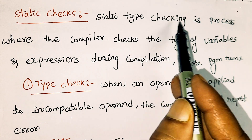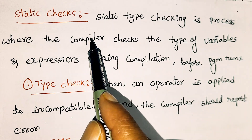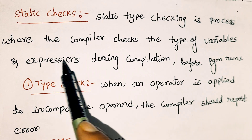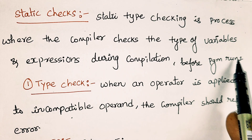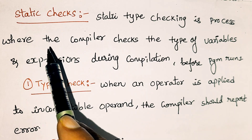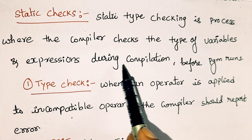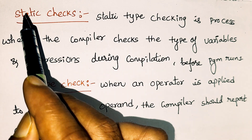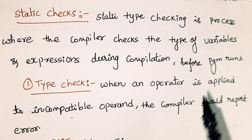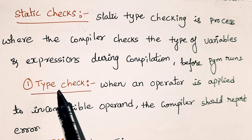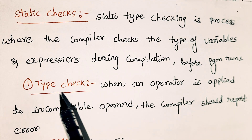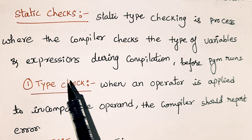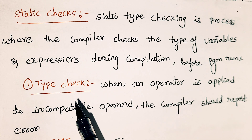Static type checking is the process where the compiler checks the types of variables and expressions during compilation — before the program runs, at compile time. The four categories of static checks are: type check, flow of control, checks for uniqueness, and name-related checks.